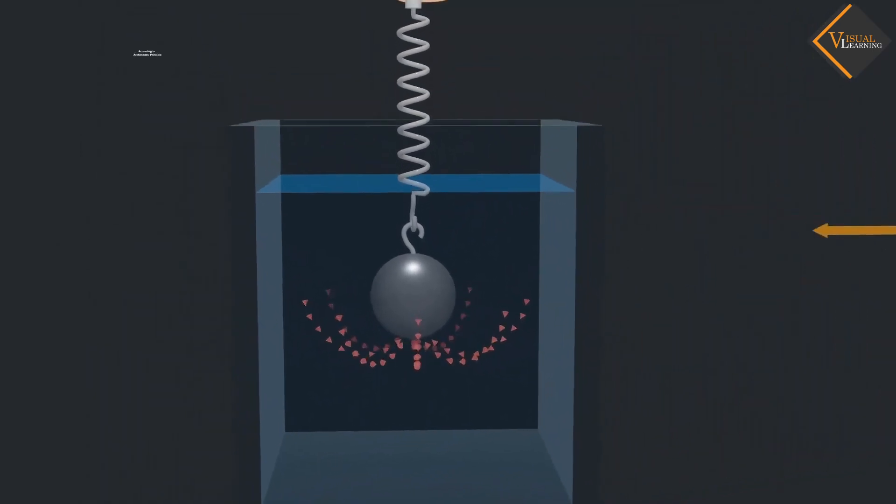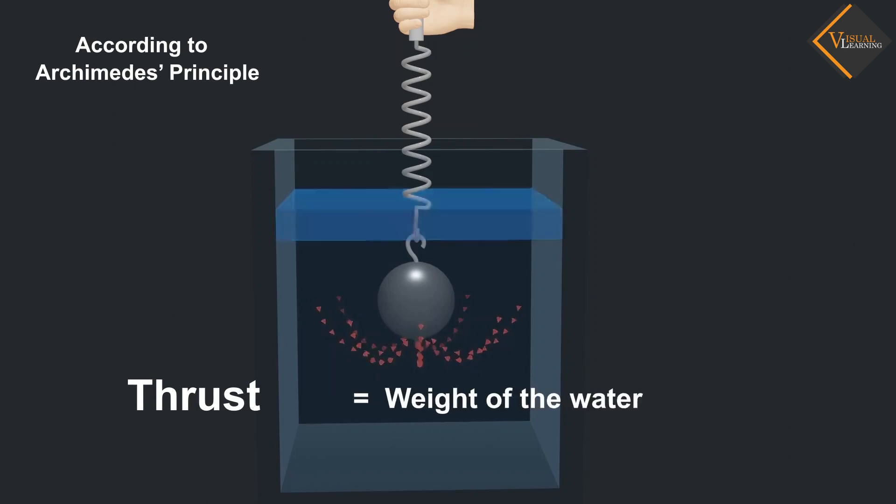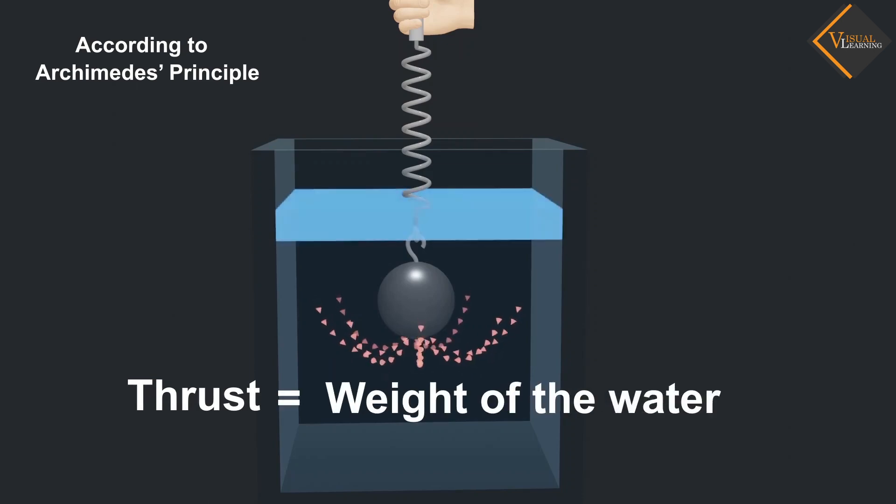Now, according to Archimedes Principle, this upward thrust is equal to the weight of the water displaced by the iron ball.